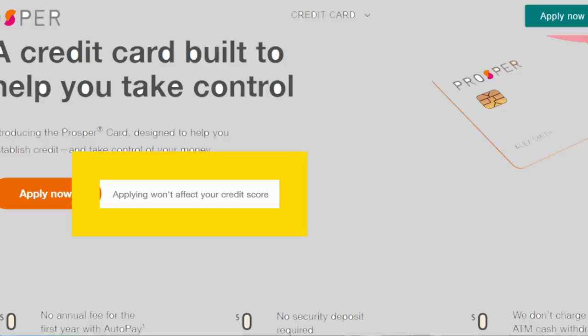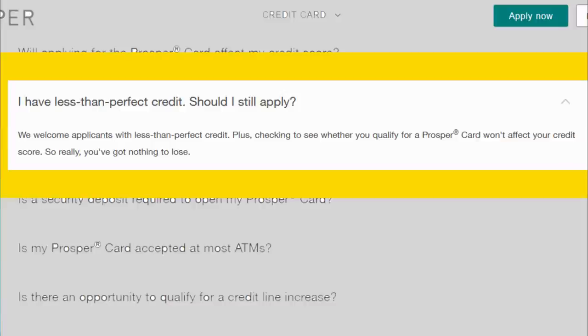All right, let's talk about that idea of the soft pull or soft inquiry on your credit report when you apply for the Prosper card. In multiple places on their website, they say you can apply without a ding to your credit score. They even say somewhere along the line that if you have a bad credit history, why not give it a shot? Why not apply and see if they would approve you or not? Because it's not going to hurt your credit score.